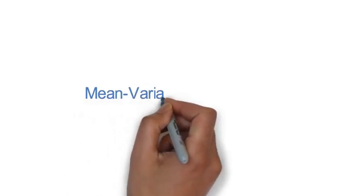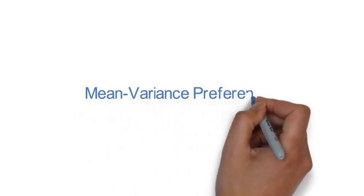Now, this video is about a very special preference function, namely mean-variance preferences.